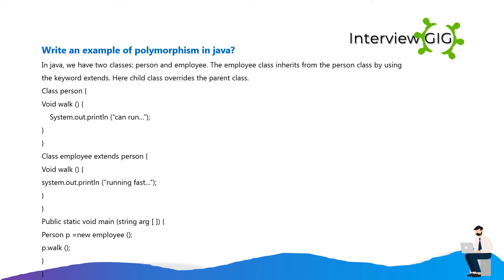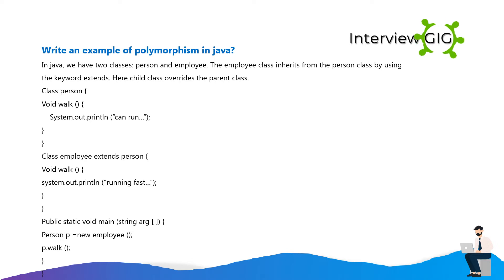Write an example of polymorphism in Java. In Java, we have two classes, Person and Employee. The Employee class inherits from the Person class by using the keyword extends. Here child class overrides the parent class. Class Person { void walk() { System.out.println("can run"); } } Class Employee extends Person { void walk() { System.out.println("running fast"); } public static void main(String[] args) { Person p = new Employee(); p.walk(); } }